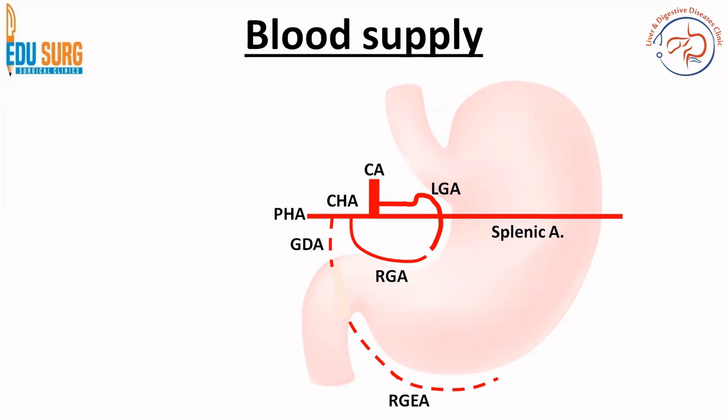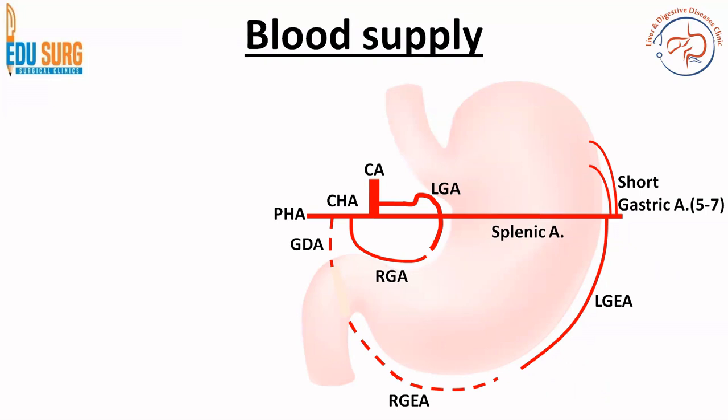The proper hepatic artery usually will not give a branch to the stomach unless the right gastric artery has an anomalous origin. Short gastric arteries are 5 to 7 in number and they arise from the splenic artery, as does the left gastroepiploic artery. So four major branches: the left gastric and the right gastric artery, and the right gastroepiploic and the left gastroepiploic artery. The short gastric arteries are 5 to 7 in number. The anastomotic area between the left and the right gastroepiploic artery is known as the arc of Barkow — a very commonly asked question.